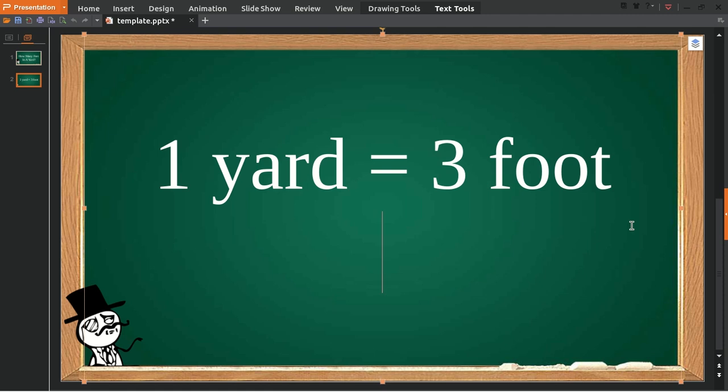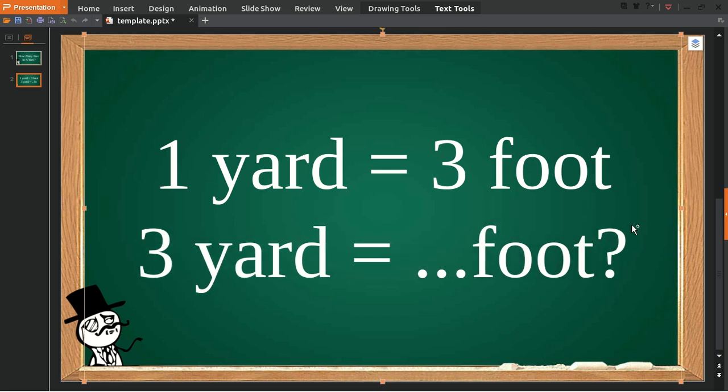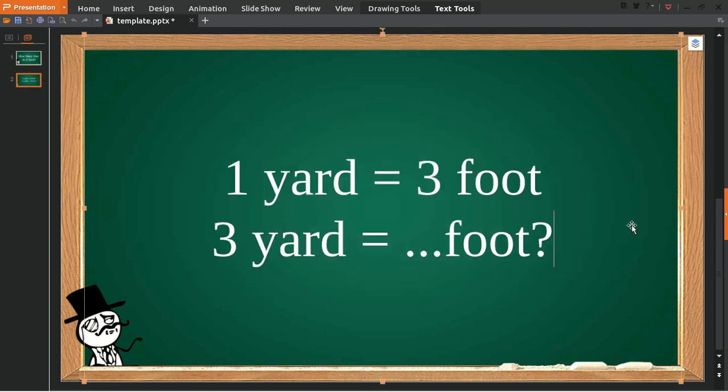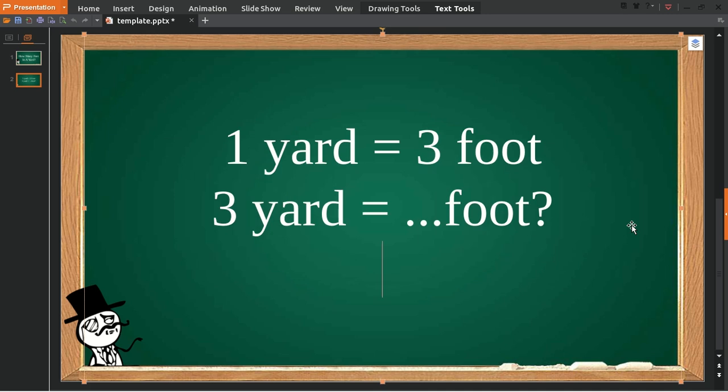feet do we have in three yards? Okay, so to solve this problem, the first thing we need to do is multiply three that we have from here with this number. When you are given an equal sign,